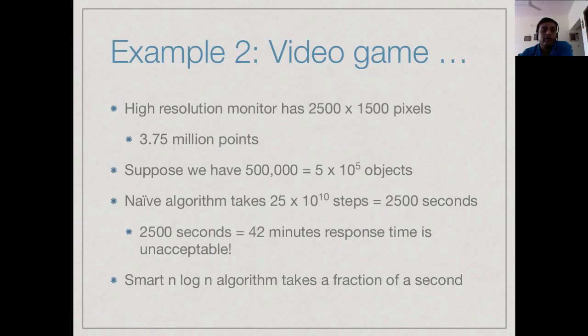If we were to compute the pair of objects among these 500,000 which are closest to each other using the naive n square algorithm, then you would expect to take 25 times 10 to the 10 steps. 25 into 10 to the 10 is 2500 seconds which is around 40 minutes. Now if you are playing a game, an action game in which reflexes determine your score, obviously each update cannot take 40 minutes. That would not be an effective game.